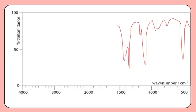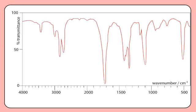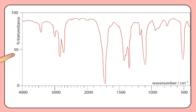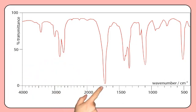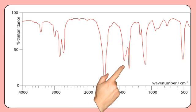A spectrum is then produced, where the wavenumber in centimetres to the minus 1 is plotted along the x-axis and the detector response, or percentage transmittance, is plotted along the y-axis. The peaks in the spectrum show where bonds within the molecule have absorbed infrared radiation. In AS chemistry, you only need to be able to recognise a few key peaks.